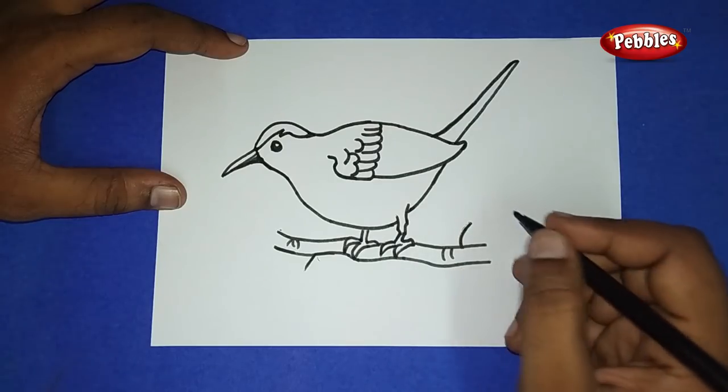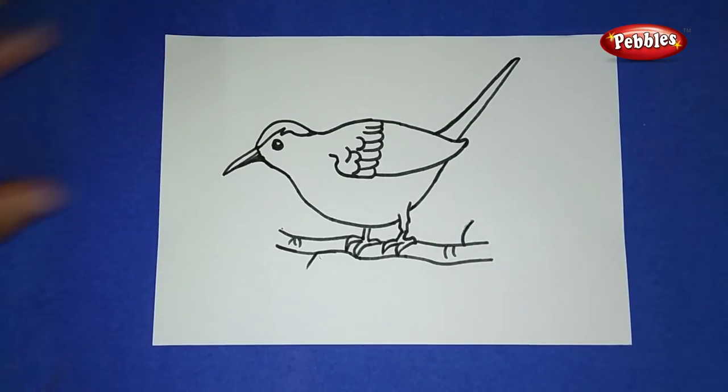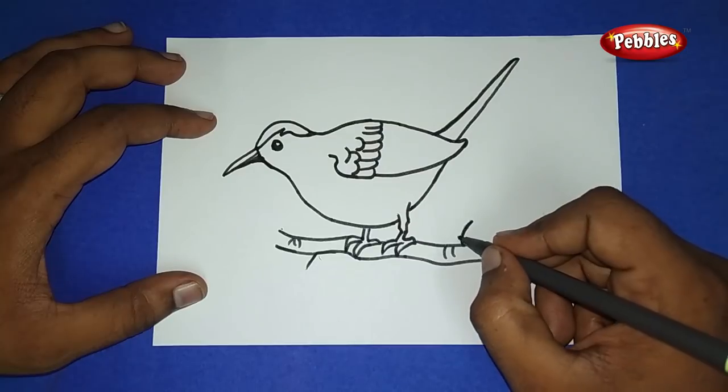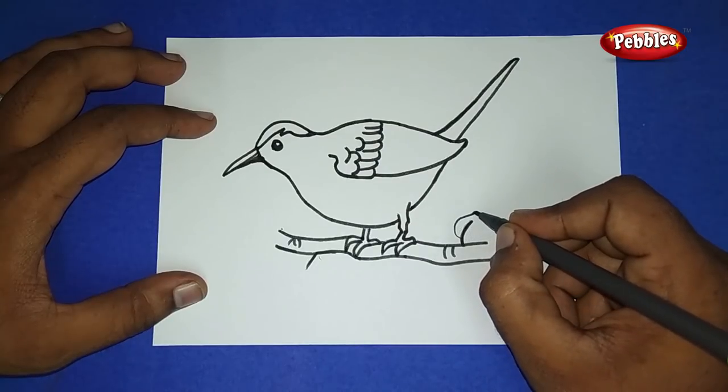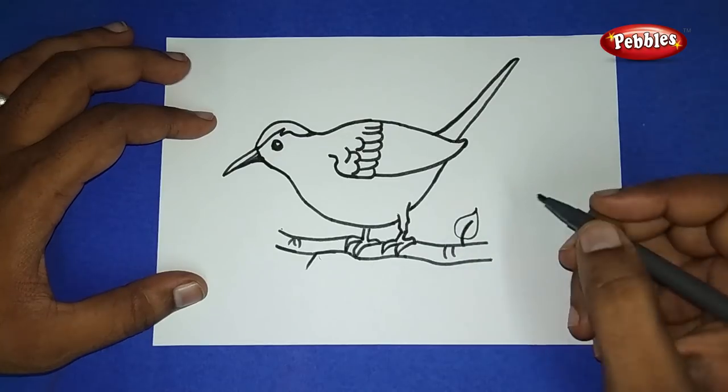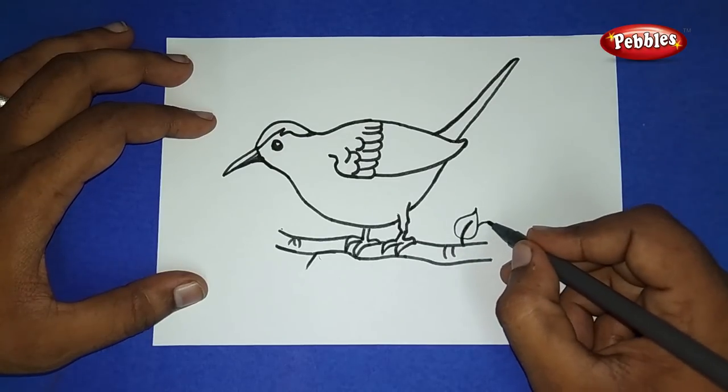At the top of that wood, draw slanting lines like this and draw leaves. And again from that leaf, draw another leaf.